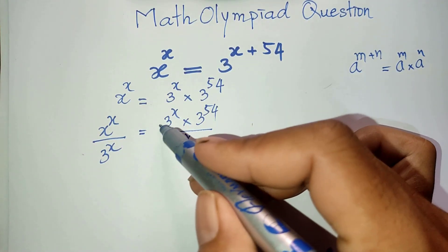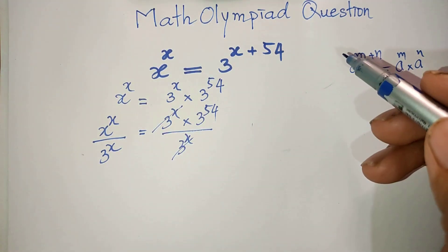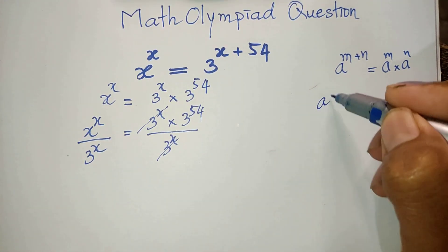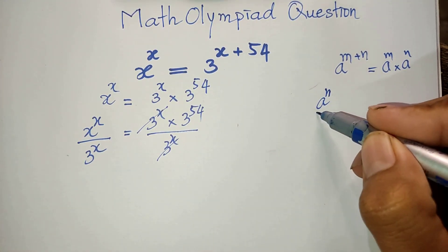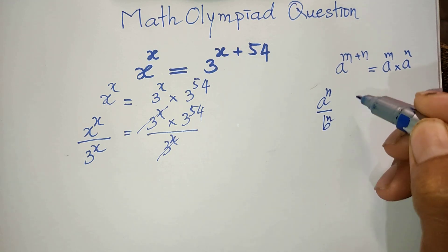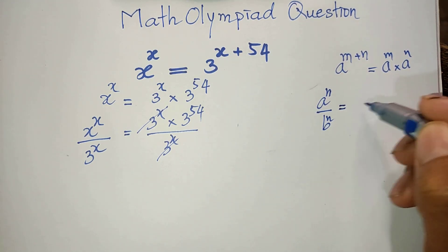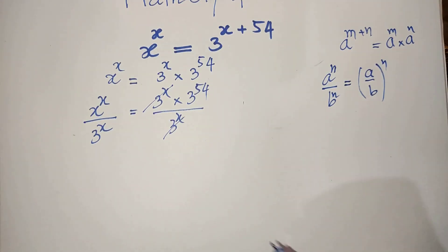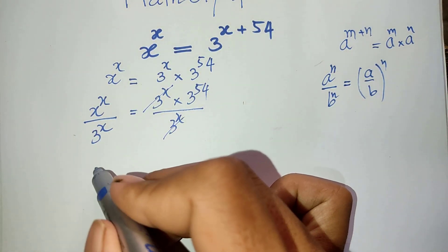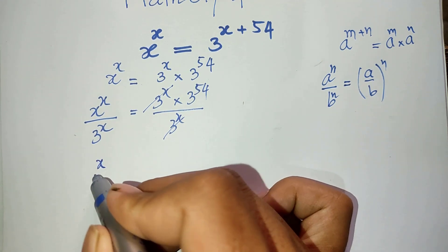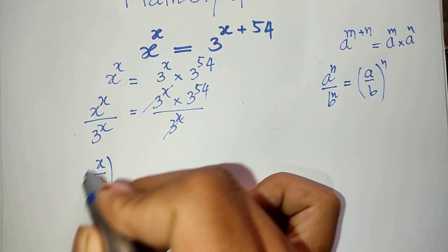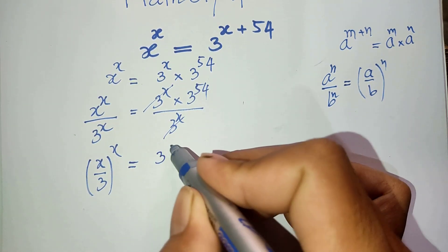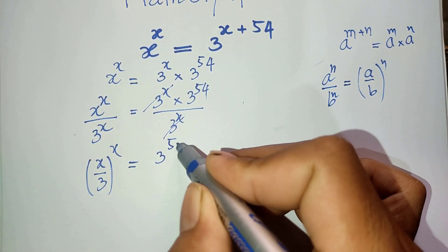Now I simplify. We use the rule that a to the power n divided by b to the power n equals a divided by b, all to the power n. This gives us a result of the form divided by 2, to the power 9.